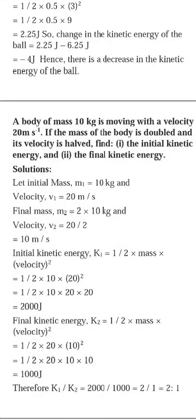A body of mass 10 kg moves at 20 m/s. Mass is doubled and velocity is halved — find initial and final kinetic energy. Initial KE = half × 10 × 20² = 2000 J. Final: mass becomes 20 kg, velocity becomes 10 m/s, so half × 20 × 10² = 1000 J. Initial is 2000 J, final is 1000 J, giving a ratio of 2 to 1.